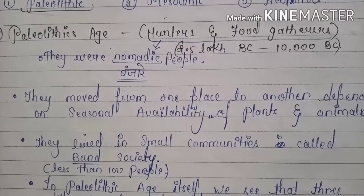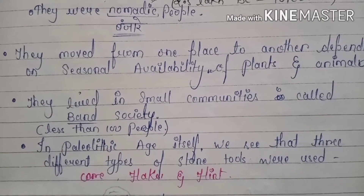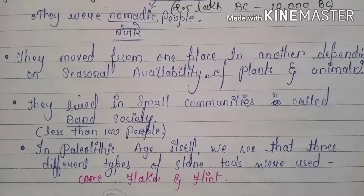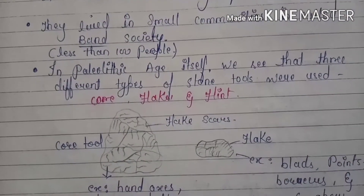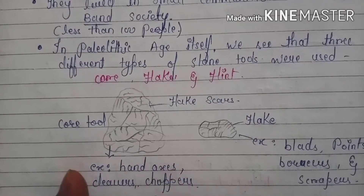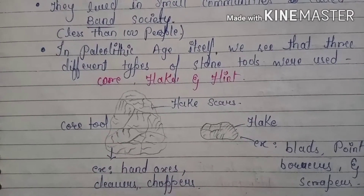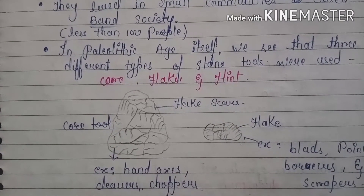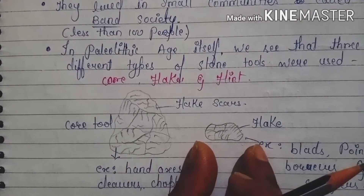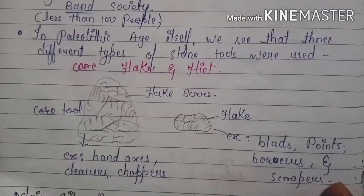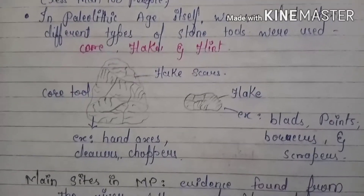In the Paleolithic age, different types of stone tools were used: core, flakes, and flints. The core was used as a big stone. Core tools were used as hand axes, cleavers, and choppers. Flake tools were used as blades, points, borers, and scrapers.